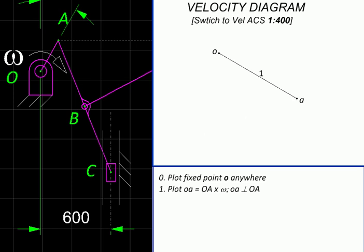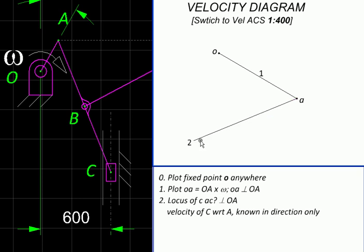So we can at least plot the locus of C. It should be somewhere on this line—we don't know yet where. Next, we will take one more clue from C's velocity, and that is C is on the slider, constrained to slide in this vertical guide.